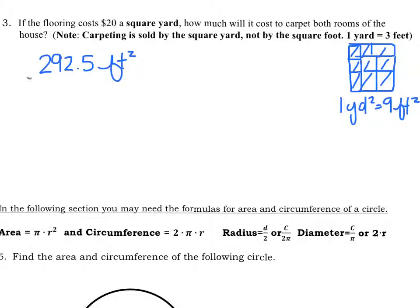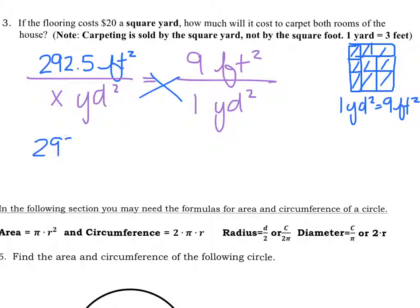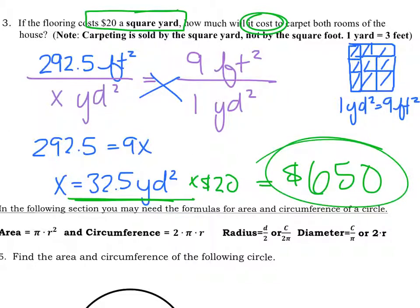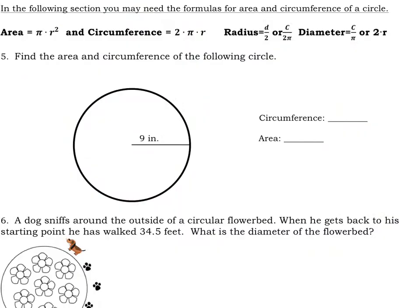292 square feet is how many square yards if we know that 9 square feet is 1 square yard? You just cross multiply and you can solve. 292.5 equals 9x. x equals 32.5 square yards. However, remember, that's not what the question is asking. We want to know how much will it cost. So we have to multiply by the $20 for every square yard. So we're going to multiply this by our $20 per square yard. And we're going to end up with a grand cost of $650. This conversion is essential to solving the problem correctly.